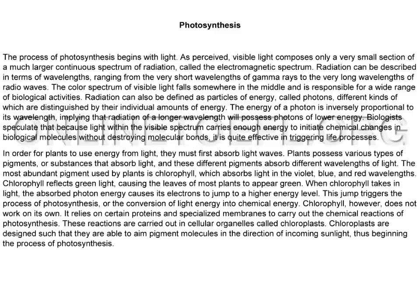In order for plants to use energy from light, they must first absorb light waves. Plants possess various types of pigments, or substances that absorb light, and these different pigments absorb different wavelengths of light.